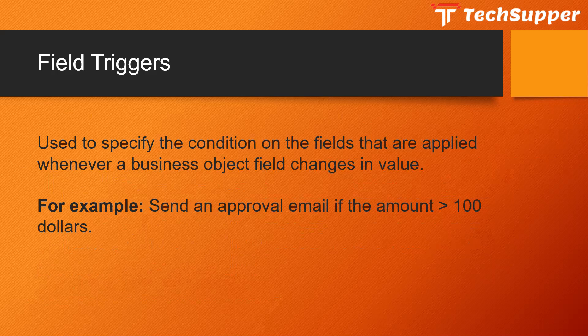Field triggers, as the name suggests, are specific to a particular field under a business object. This business rule specifies conditions on fields that are applied whenever a business object field changes in value. For example, on an expense business object with an amount field, you can send an approval email only if the amount is greater than a hundred dollars; if not, no email is sent. You can write a trigger on a specific field using field triggers.